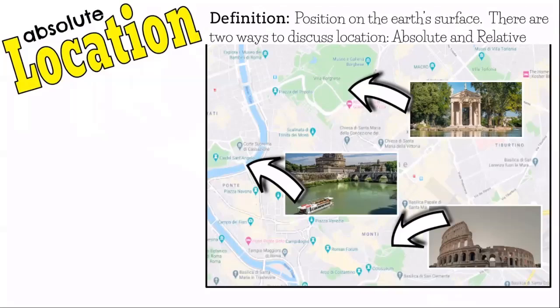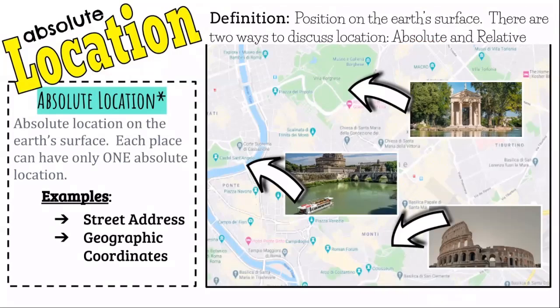When it comes to location, there are two different types that geographers analyze. The first is absolute location. The definition of absolute location is position on the earth's surface. Each place can only have one absolute location — for example, a street address or geographic coordinates.